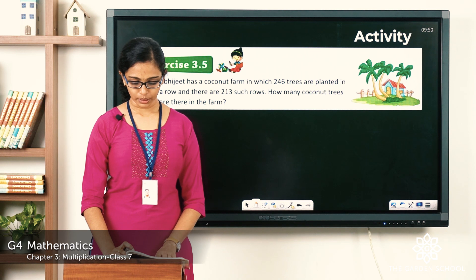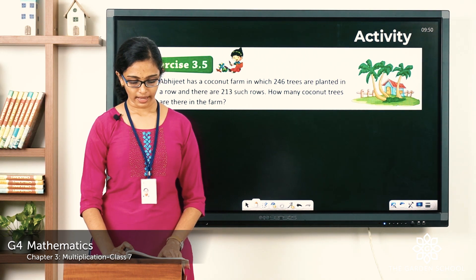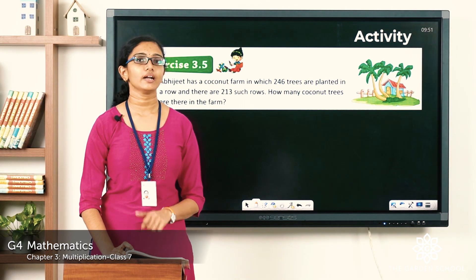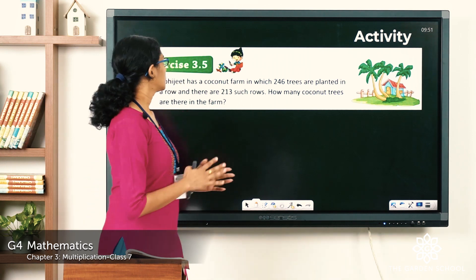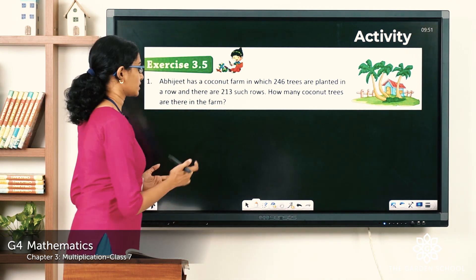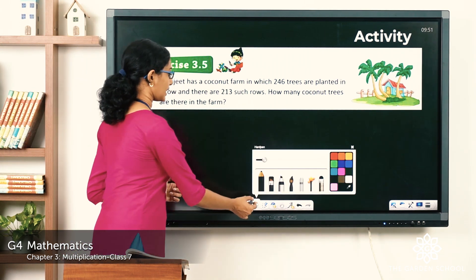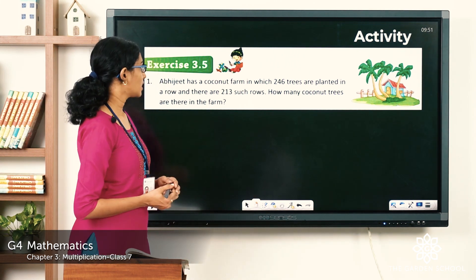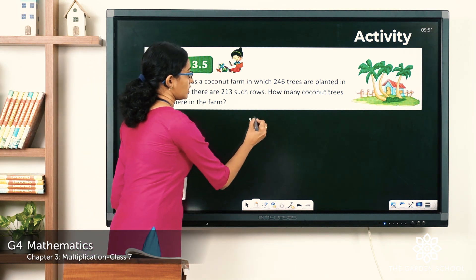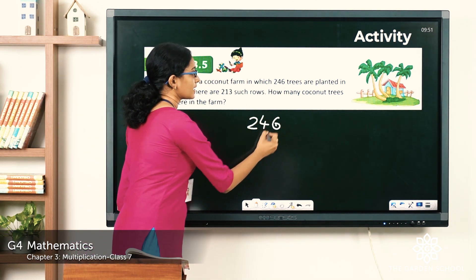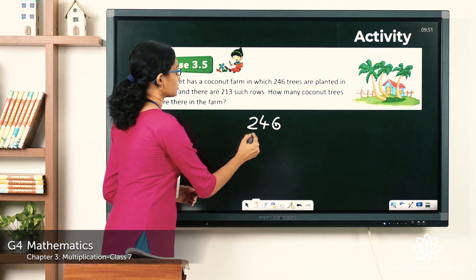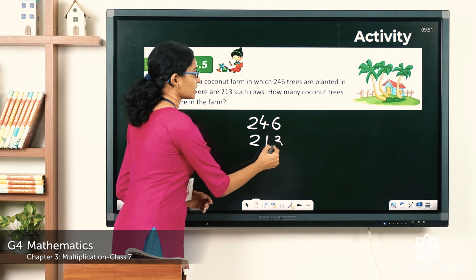The question is: Abhijit has a coconut farm in which 246 trees are planted in a row and there are 213 such rows. How many coconut trees are there in the farm? So what is given: there is a coconut farm where coconut trees are planted in rows. You might have seen coconut farms. You have 246 trees in one row and there are 213 such rows.